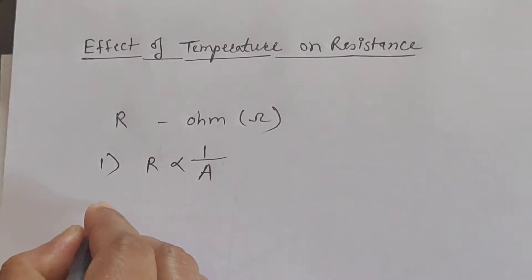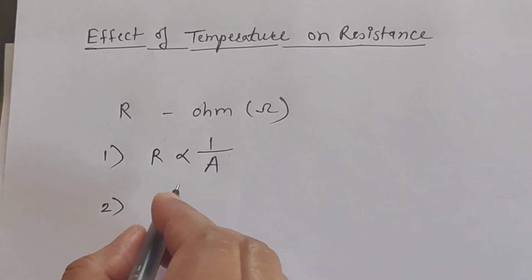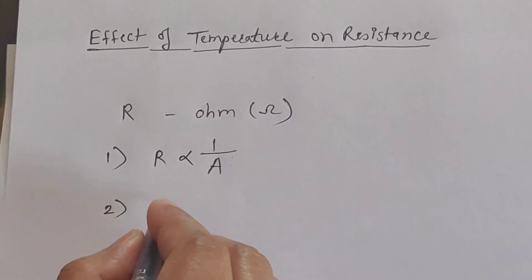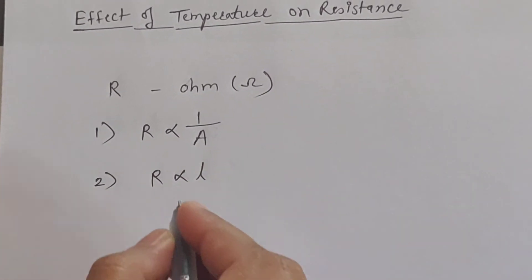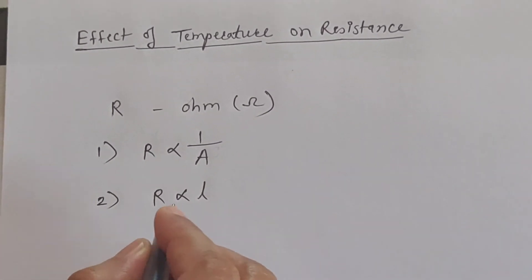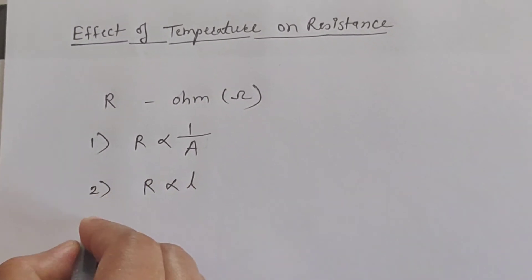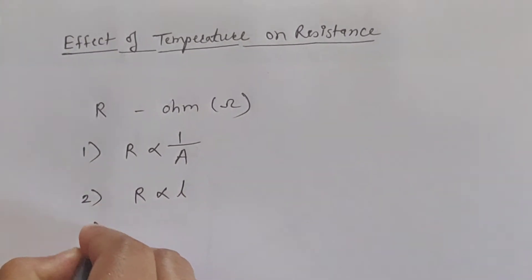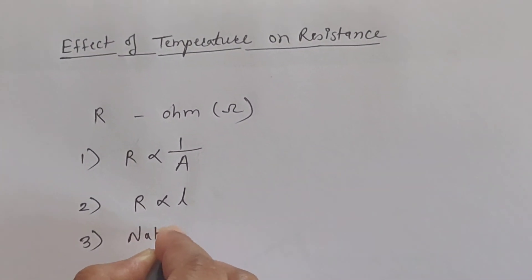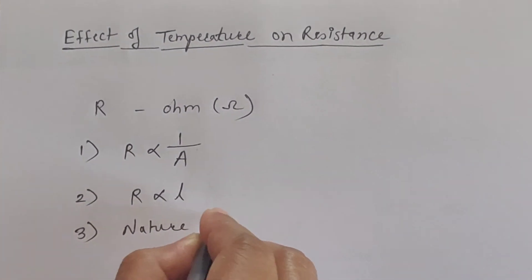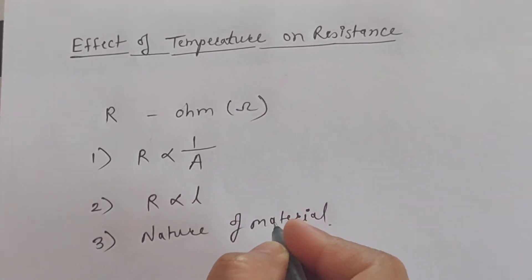The second factor is the length of the conductor. Resistance is directly proportional to length — as length increases, resistance increases, and vice versa.